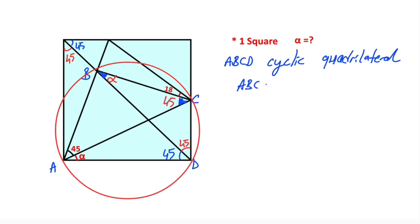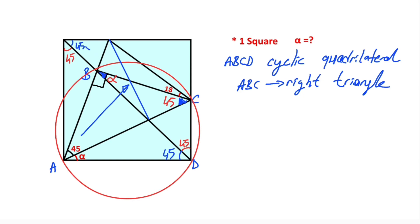So triangle ABC is a right triangle, and therefore angle ABC here must be equal to 90 degrees. And then if we connect these two points, notice that opposite 45 degrees have the same length. So we have one more cyclic quadrilateral — let's call the points O, E, and F. That means AOEF is a cyclic quadrilateral.